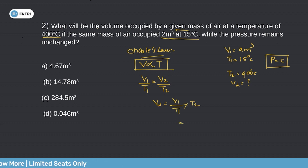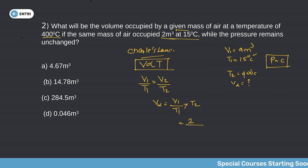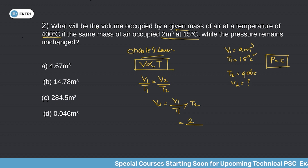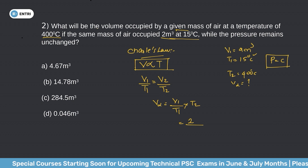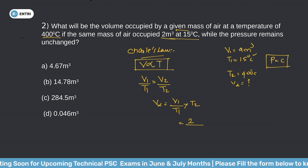V1 is 2 cubic metres at T1 equal to 15 degrees Celsius. Since volume is directly proportional to absolute temperature, we first need to convert the temperatures from degrees Celsius to Kelvin before applying the formula.